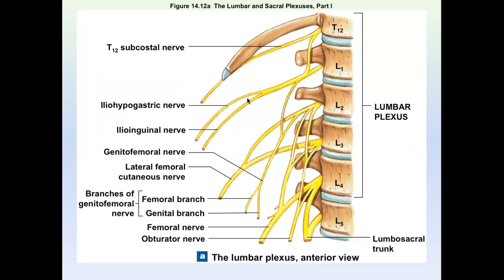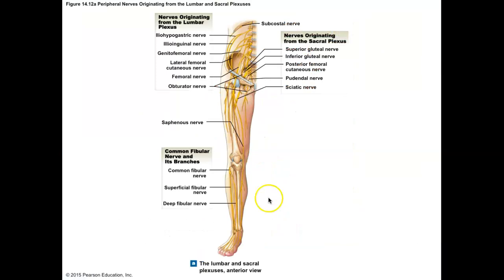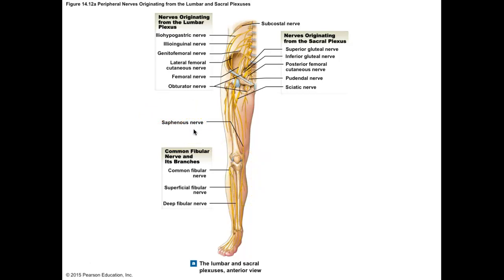In the lumbar plexus, you're responsible for the femoral nerve and the obturator nerve. The femoral nerve will pass the inguinal ligament and come into the thigh. It will serve all of your anterior thigh — all the quadriceps muscles are served by the femoral nerve. The femoral nerve will then branch, continuing down to serve the medial leg, changing its name to the saphenous nerve. The obturator nerve goes through the obturator foramen — that foramen of the coxal bone. It's going to go to the medial thigh and serve the adductors: the gracilis, adductor longus, adductor brevis.